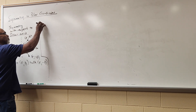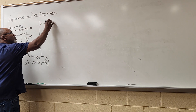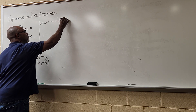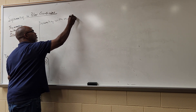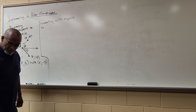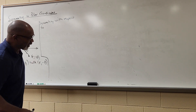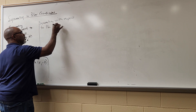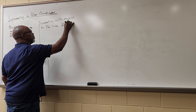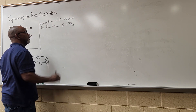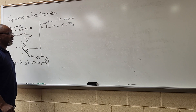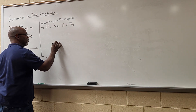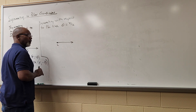The second type of symmetry is symmetry with respect to the line θ = π/2. That's the second type of symmetry — symmetry with respect to the line θ = π/2. There's the polar axis, and θ = π/2 is the angle π/2.